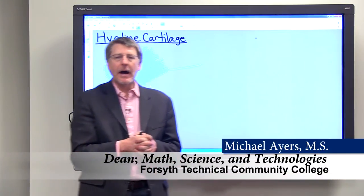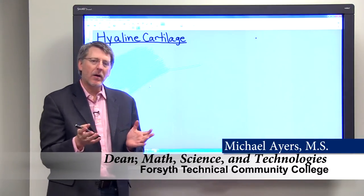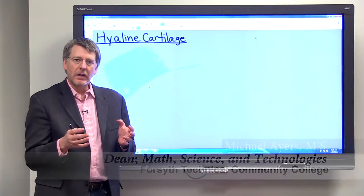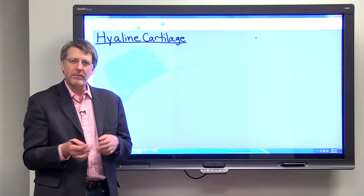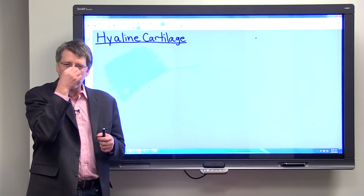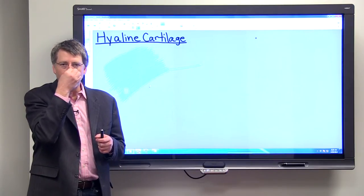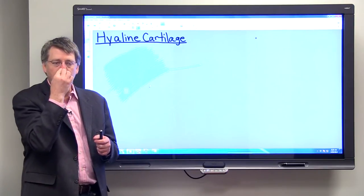Okay, so next we want to think about hyaline cartilage. Hyaline cartilage is a tissue that's very tough, but it's also very flexible. And the best thing to do to understand the nature of hyaline cartilage is to manipulate the end of your nose, which contains hyaline cartilage.